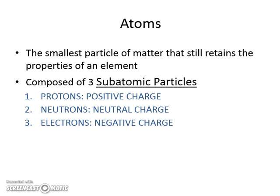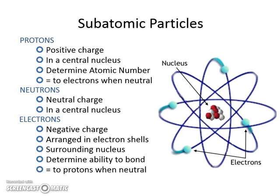You can remember protons are positive, neutrons are neutral, and electrons are negative — think of electricity. Subatomic particles, listed here, talks a little bit more about their properties. Make sure that you understand where you can find them in an atom. The biggest one is that electrons are on the outside, and that's kind of how it explains how different molecules like sodium and chlorine can combine to make sodium chloride.